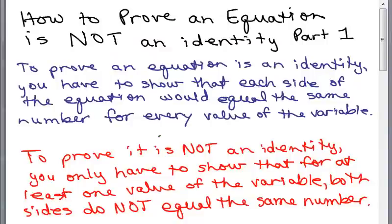In this video, we're going to show how to prove an equation is not an identity. To prove an equation is an identity, you would have to show that each side of the equation equals the same number for every value of the variable. That's tricky when it comes to something like a trig equation, but for some algebra equations this isn't too difficult.